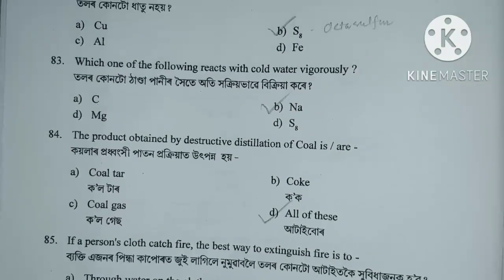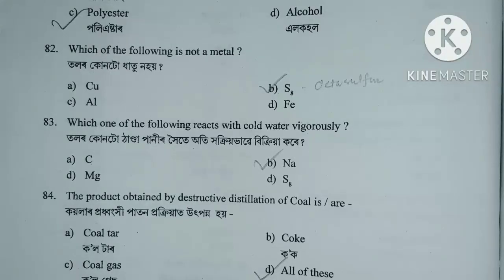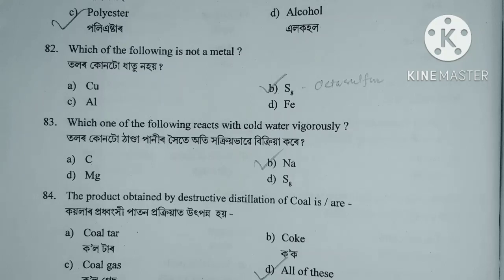Question number 82. Which of the following is not a metal? Option A. Copper. Option B. Octasulfur (S8). Option C. Aluminium. Option D. Iron. Option B, Octasulfur (S8).